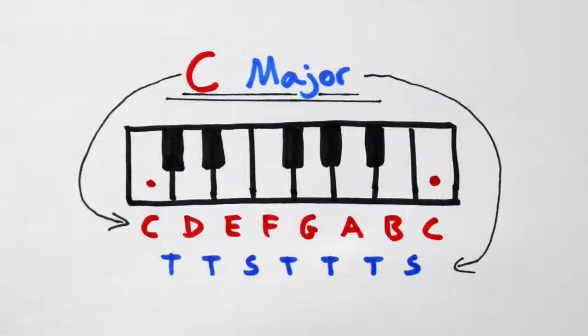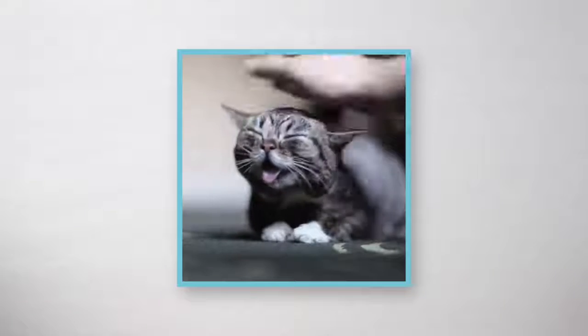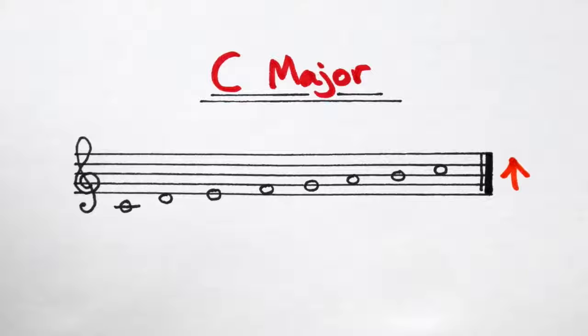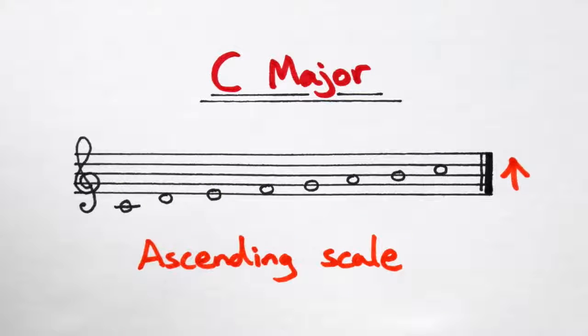Any scale that follows this formula is called a major scale and will always sound happy. The scale of C major written out looks like this. If we play it going up.